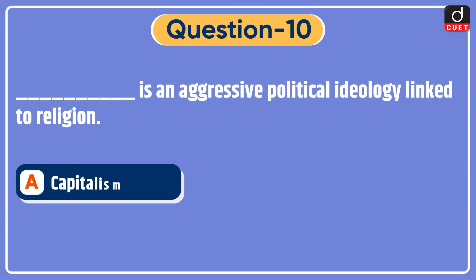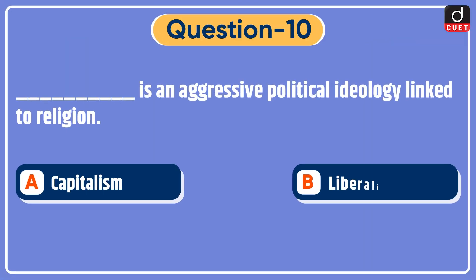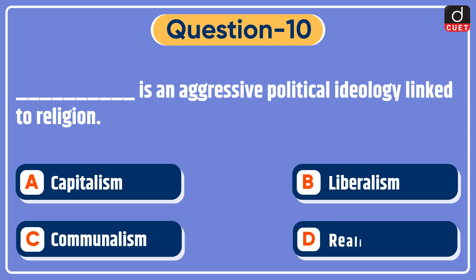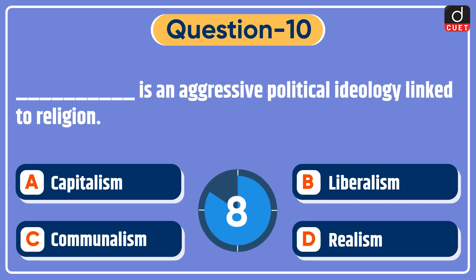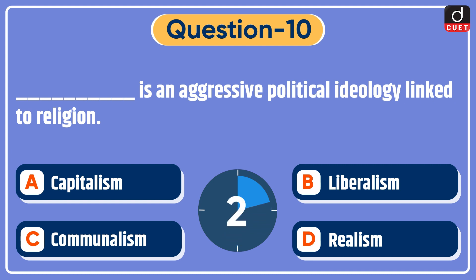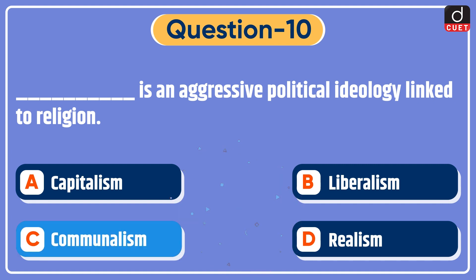Last question: dash is an aggressive political ideology linked to religion — Capitalism, Liberalism, Communalism, or Realism? The correct answer is option C, Communalism.